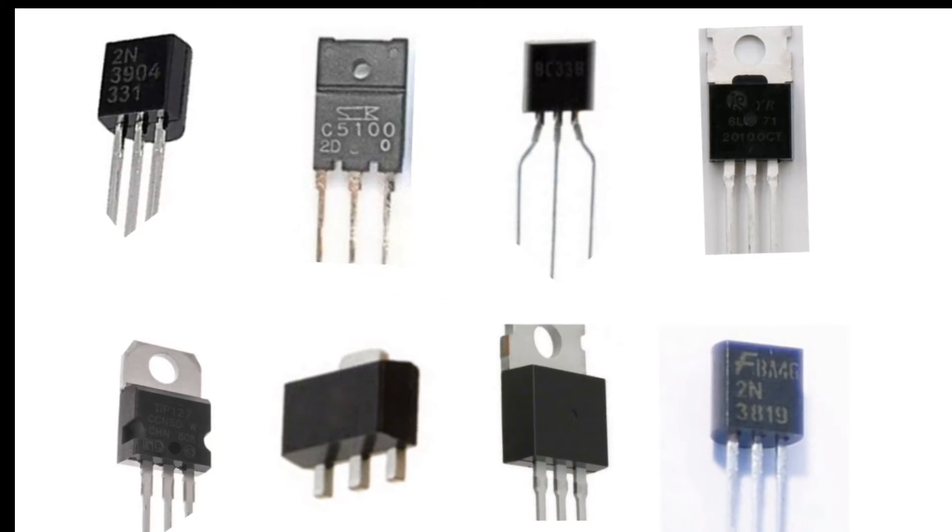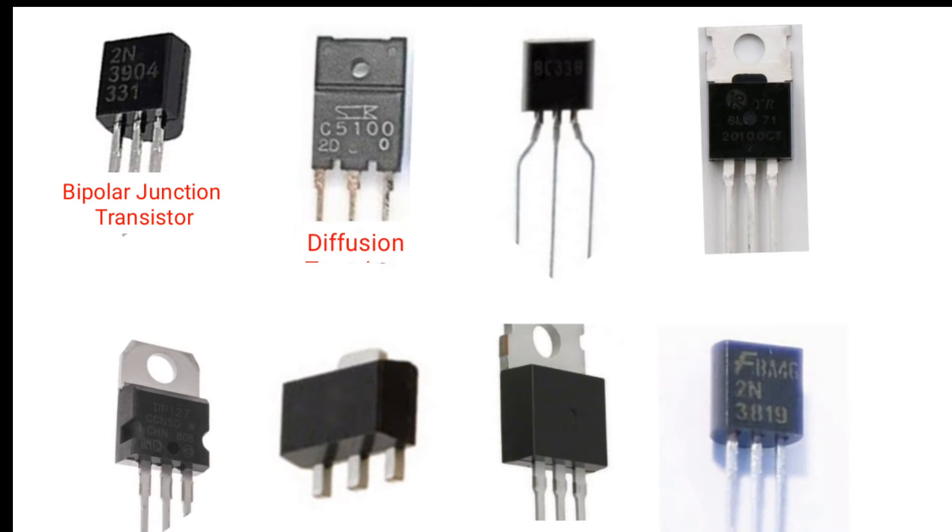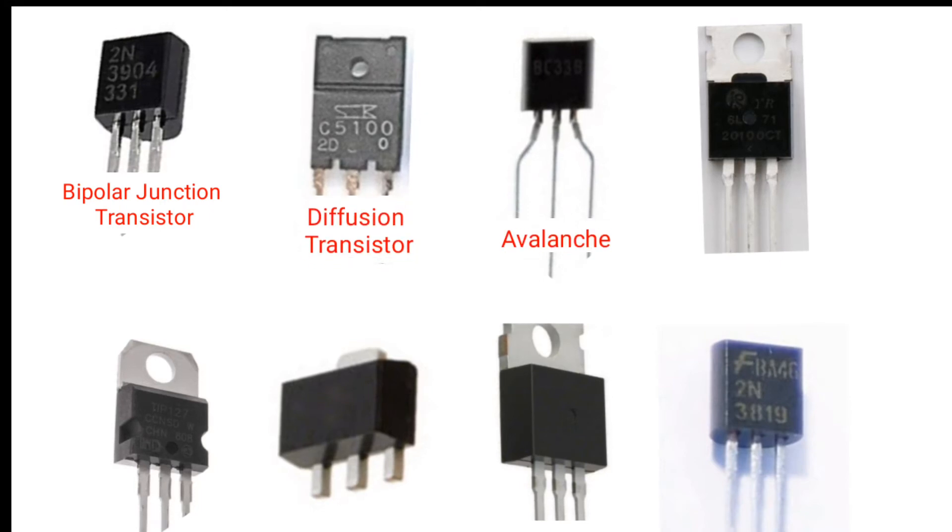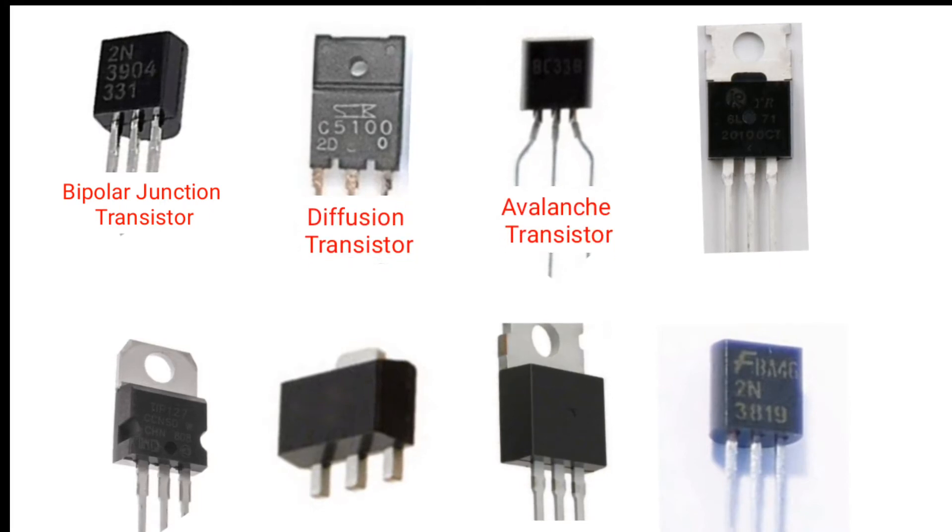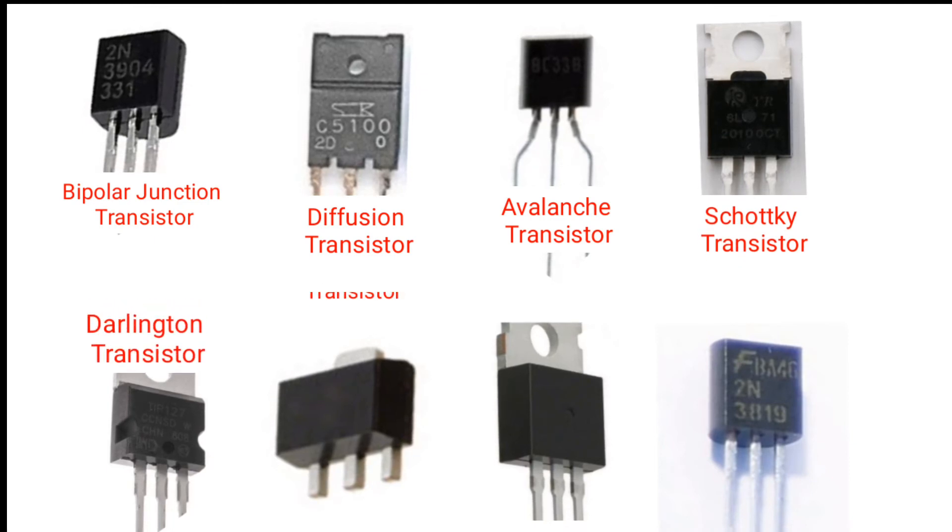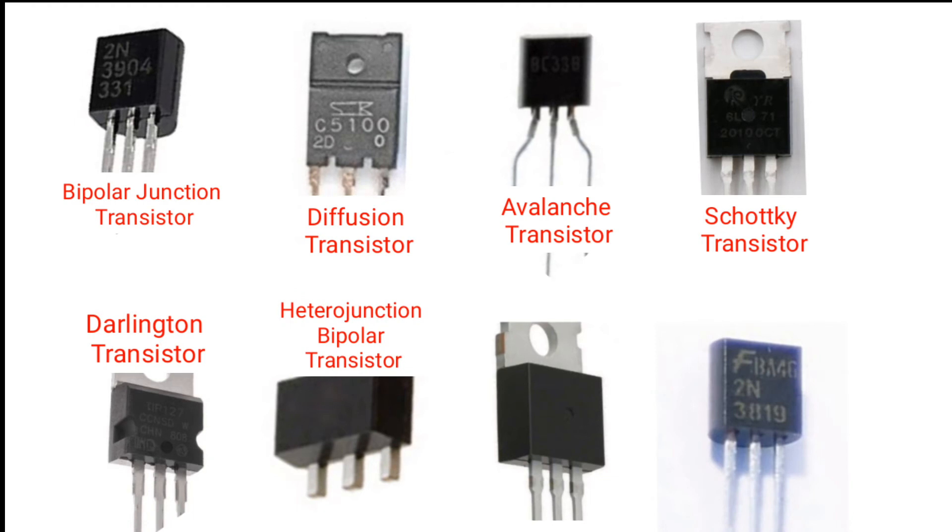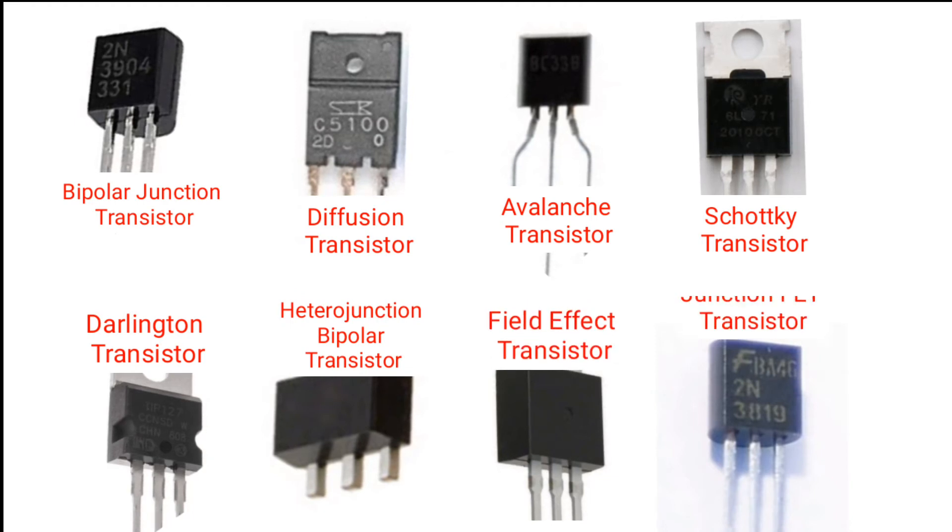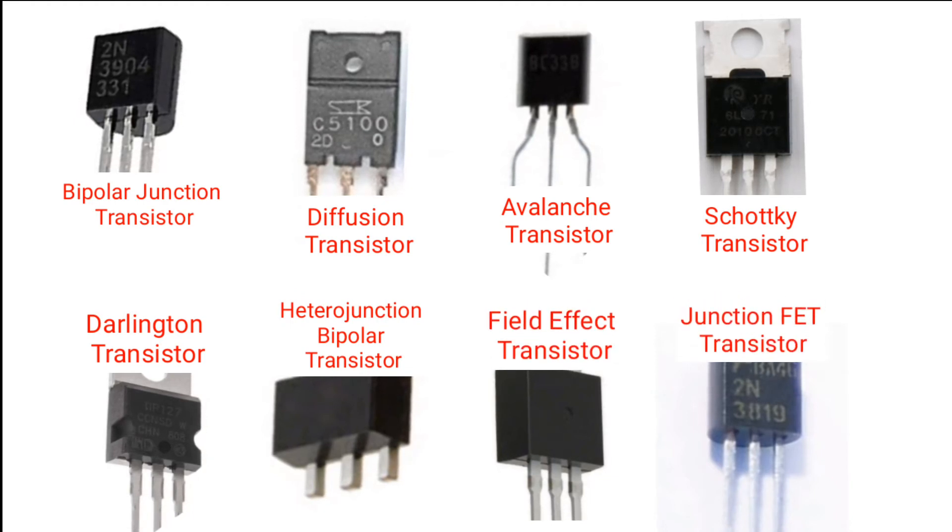Some types of transistors are: bipolar junction transistor, diffusion transistor, avalanche transistor, Schottky transistor, Darlington transistor, heterojunction bipolar transistor, field effect transistor, junction FET transistor.